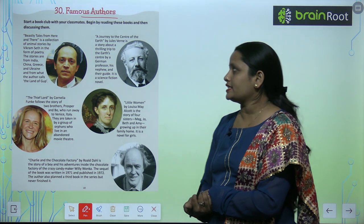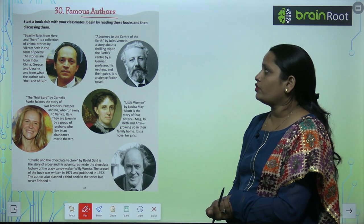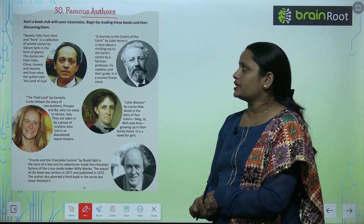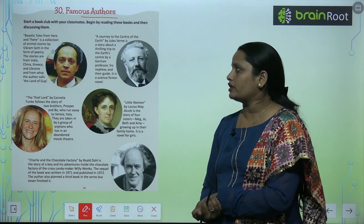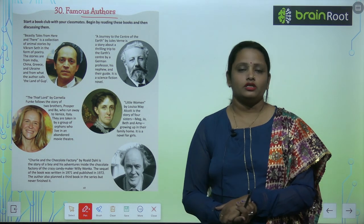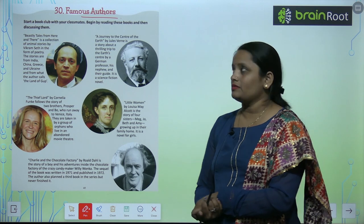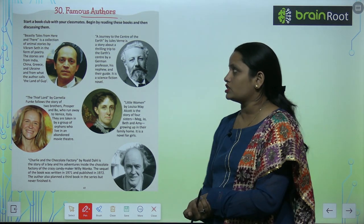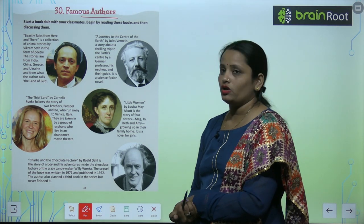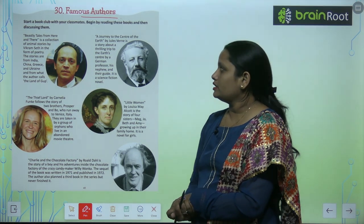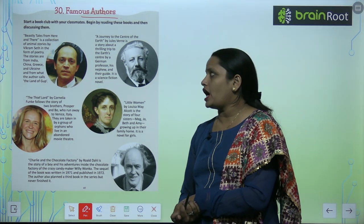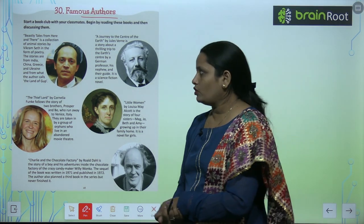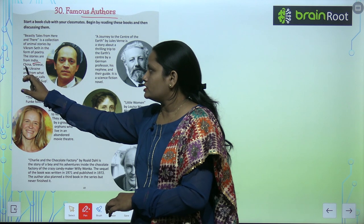The first is A Beastly Tale from Here and There. It is a collection of animal stories by Vikram Seth in the form of poetry. Vikram Seth has written this book using poetry to describe animal stories. The stories are from India, China, Greece, and Ukraine.